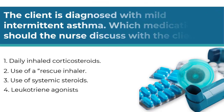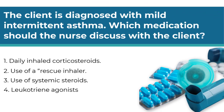Here's our first question. The client is diagnosed with mild intermittent asthma. Which medication should the nurse discuss with the client? Number one, daily inhaled corticosteroids. Number two, use of a rescue inhaler. Number three, use of systemic steroids. Number four, leukotriene agonists.